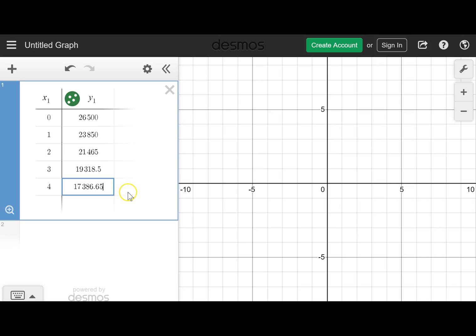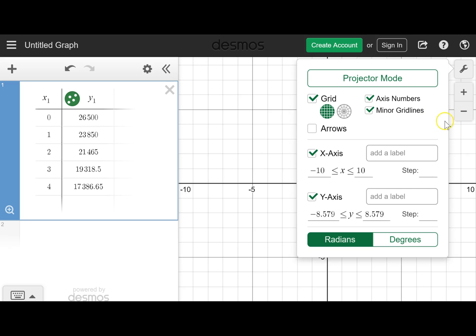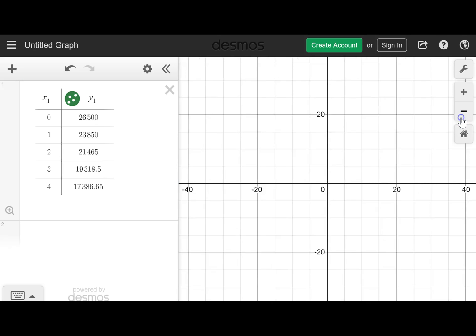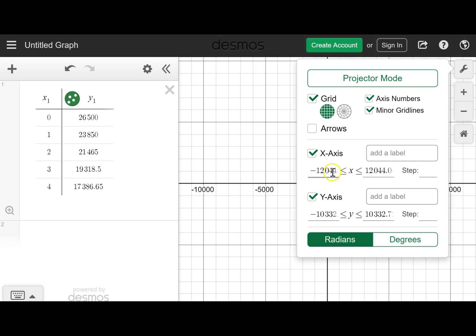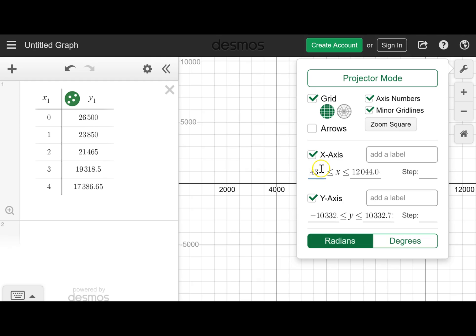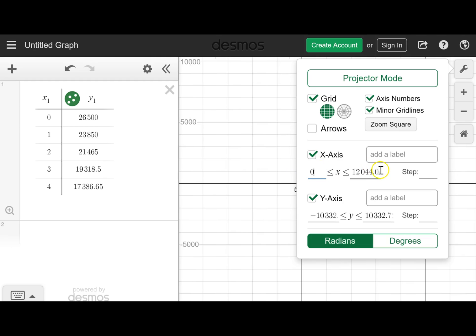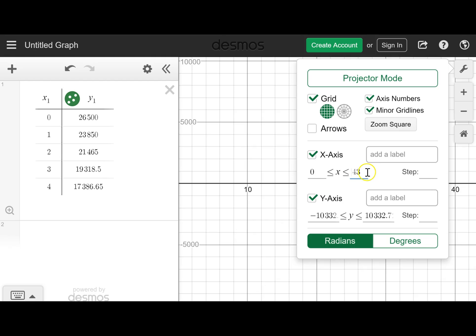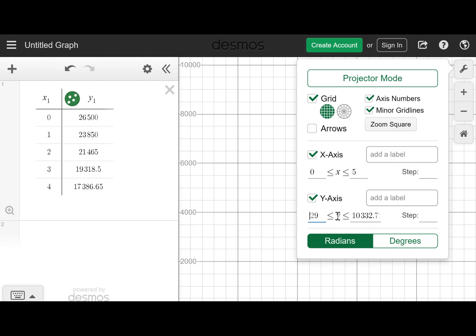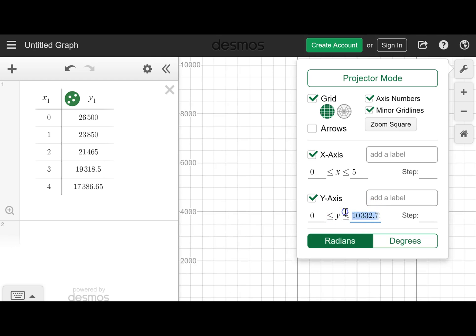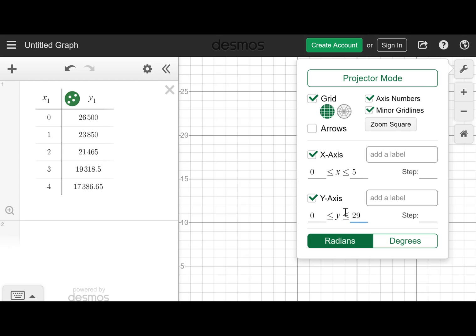I've also graphed that in Desmos. We have to change our settings to be able to see it. We could alternatively also try to zoom out, but we're going to have to zoom out a lot, so I just like to use my brain. We're talking about years on the x-axis, maybe 0 to 5 years since we only went to 4 in our table. We're talking about value of a car, so the lowest possible value is going to be 0 and we already know the highest value was 26,500.